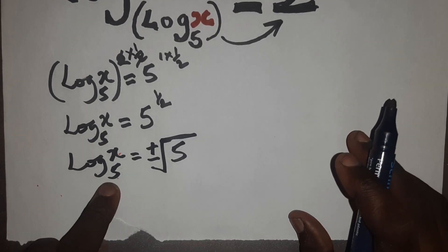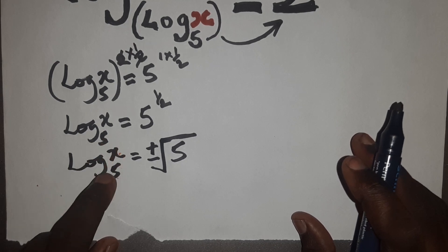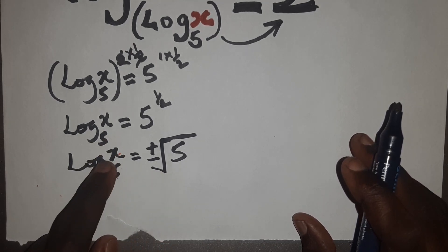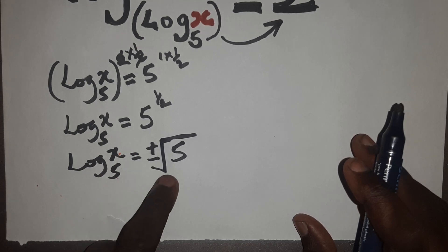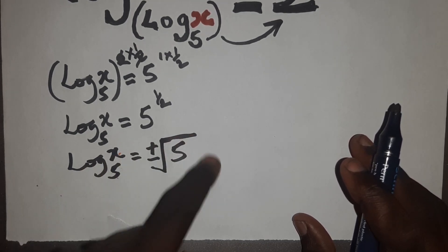Again, by definition, for this logarithm, 5 raised to the power of something must give x. So since log x base 5 is equated to this, it means 5 raised to the power of this must give x. But first of all, let's separate the terms here.